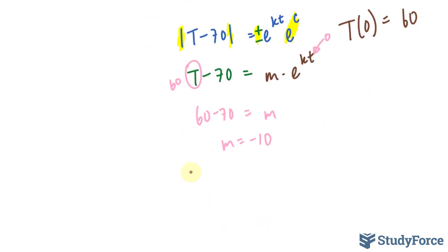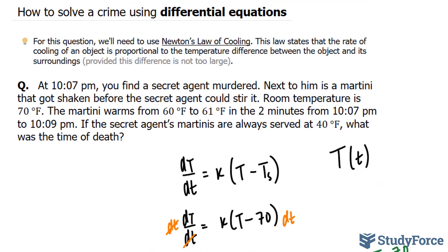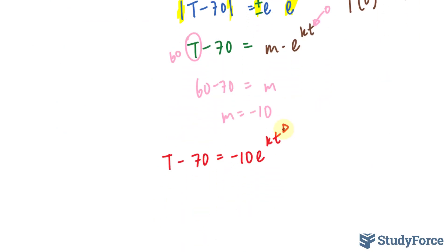This means that our equation has become T - 70 is equal to -10e^(kt). We still need to find out what this k is equal to. And we can do that by using the fact that after 2 minutes, when t at 2 is equal to 61. Let's go ahead and replace that into our equation. This becomes 2 and this becomes 61. By inputting these values into this equation, I can find out what k is.